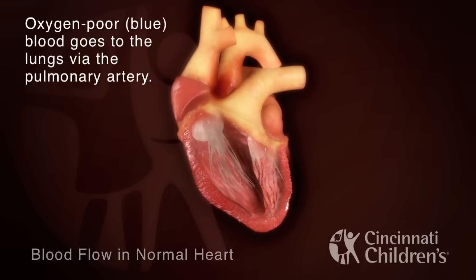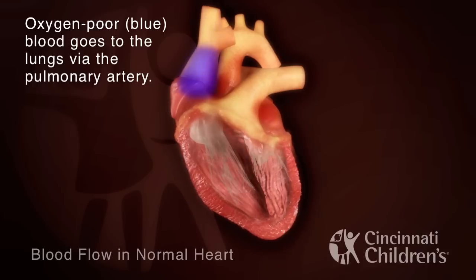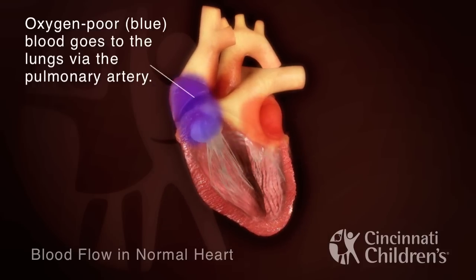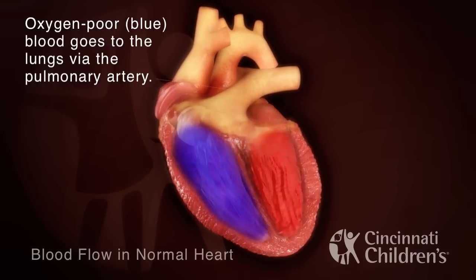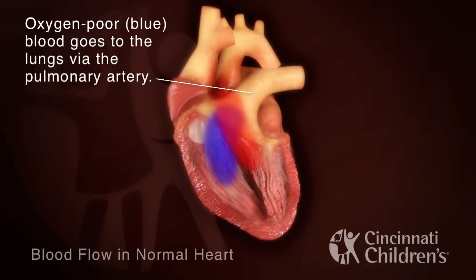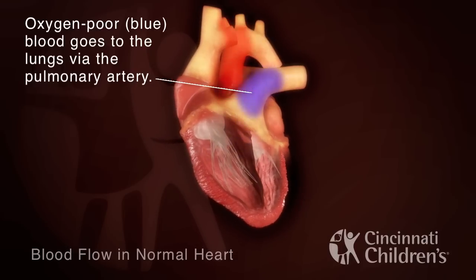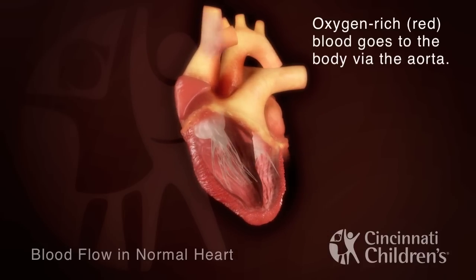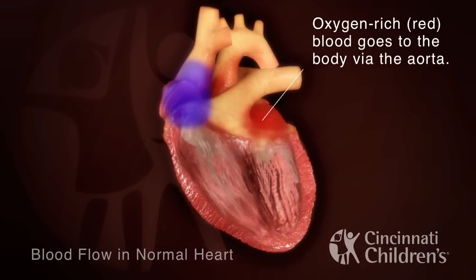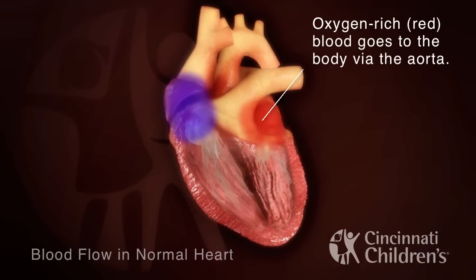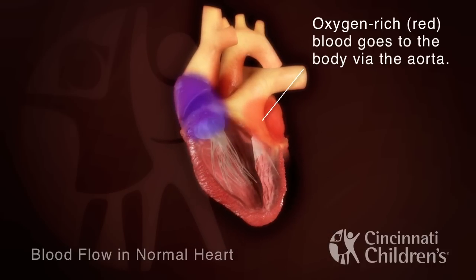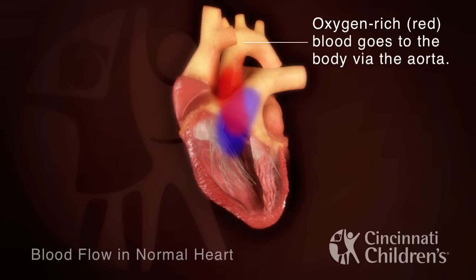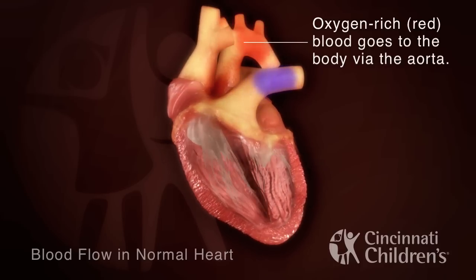In a normal heart, blue oxygen-poor blood returns to the body through the right atrium and goes to the lungs via the pulmonary artery. Red oxygen-rich blood then returns to the left atrium, enters the left ventricle, and goes to the body via the aorta.